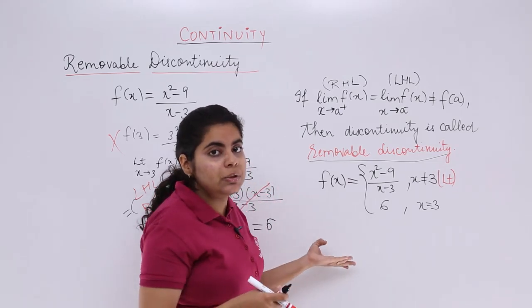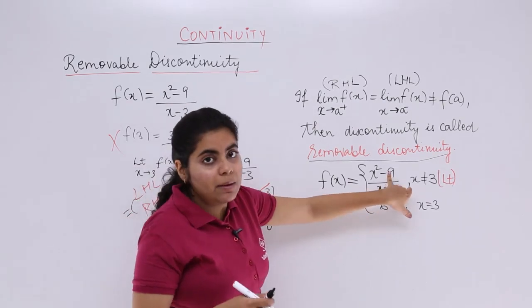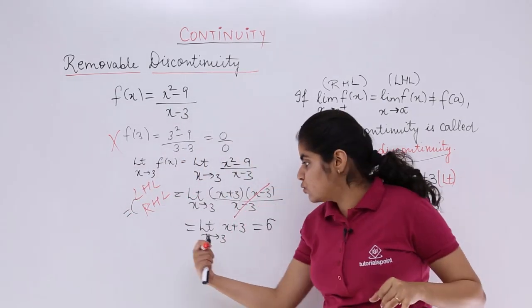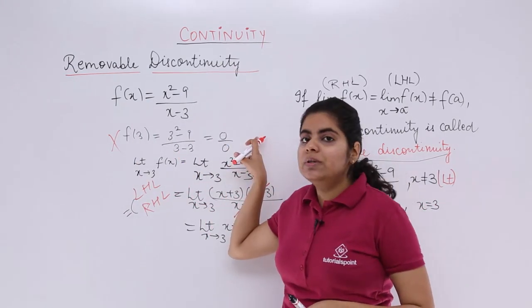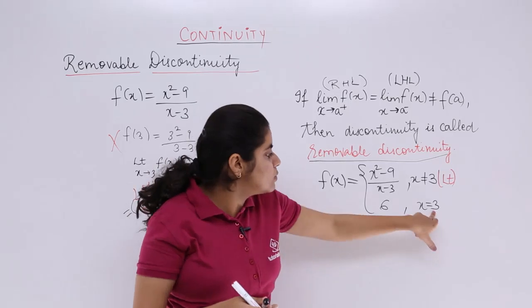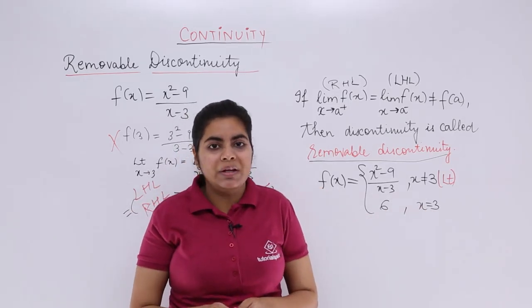Now what you do is you check the continuity. Left hand limit, right hand limit will give me 6 already upon solving, right? You solved it here. But what about x being equal to 3? You don't go about this. You say f of 3. f of 3 is what? It is 6. So everywhere you get 6 and then it will become continuous.